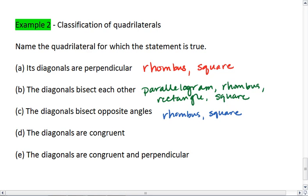Diagonals are congruent. Rectangle, and so that is also a square.